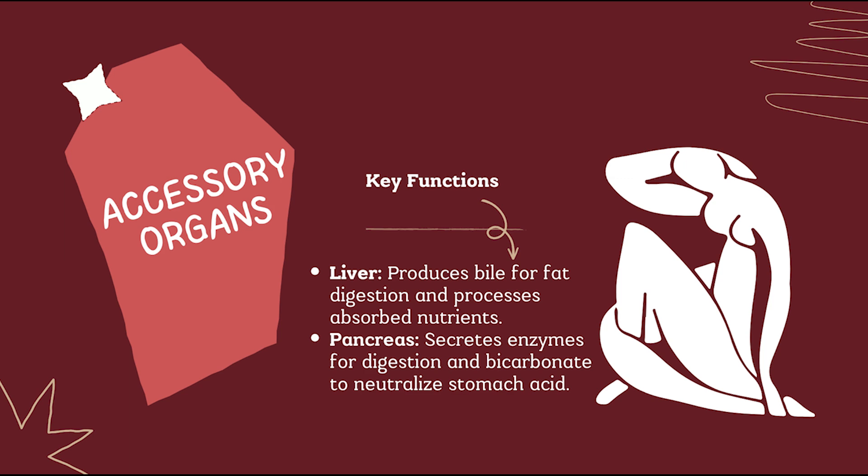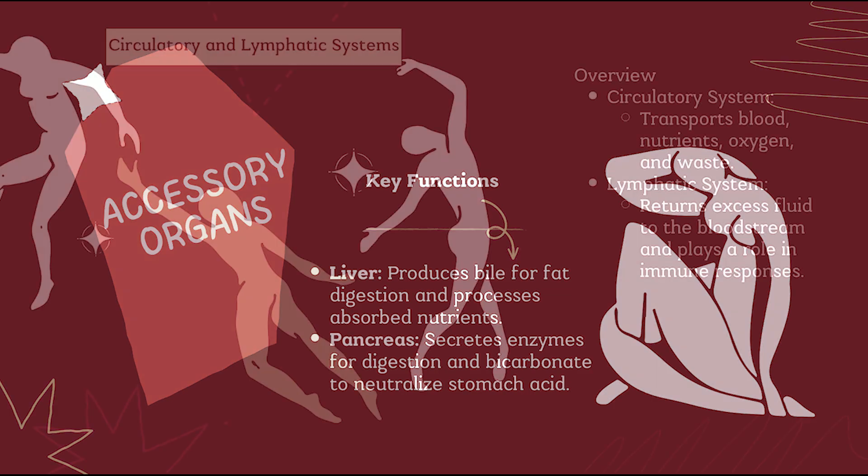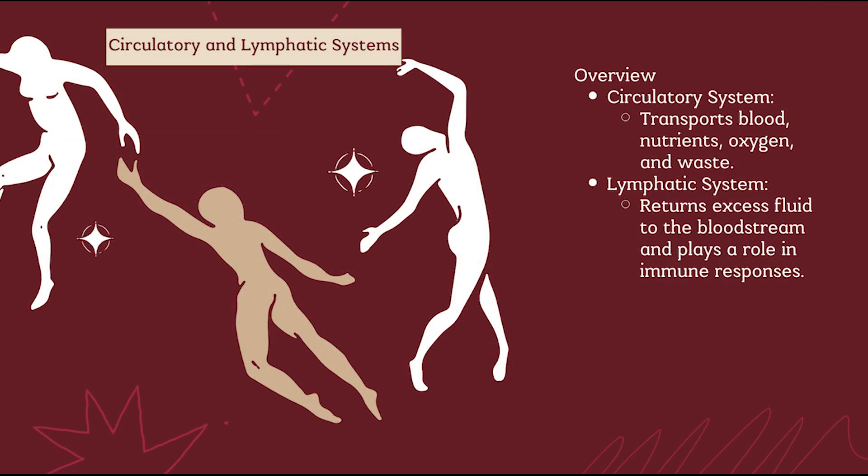Let's look at the accessory organs. The liver produces bile, which is essential for fat digestion. The gallbladder stores and releases bile. The pancreas secretes enzymes for all nutrients and bicarbonate to neutralize stomach acid. These organs support the digestive process from outside the alimentary canal.